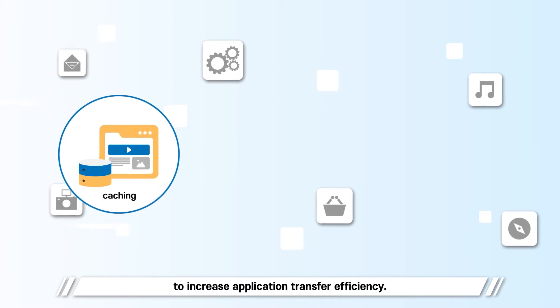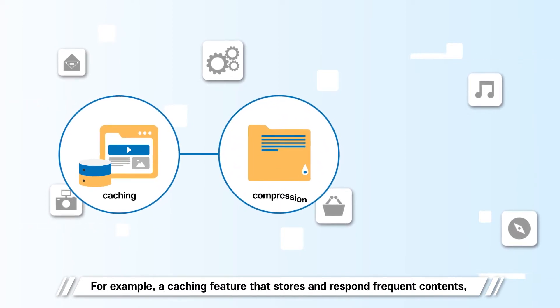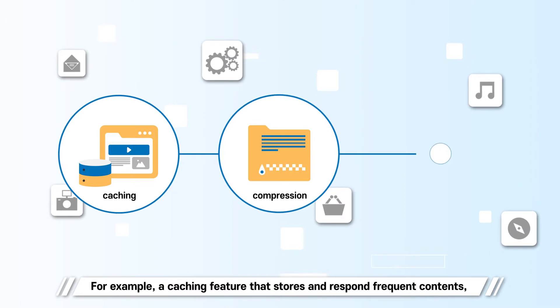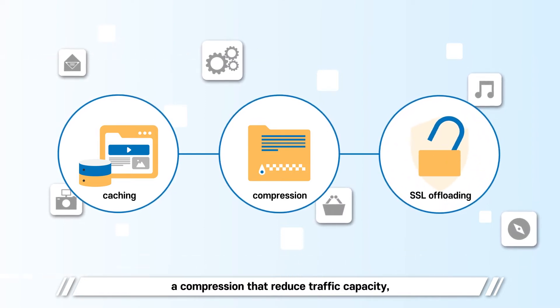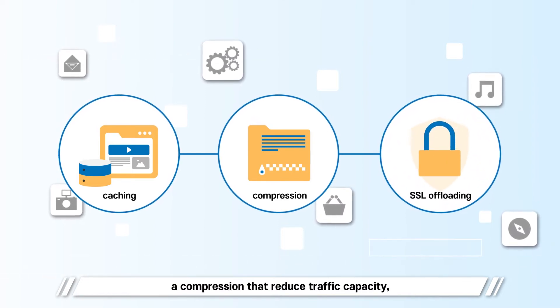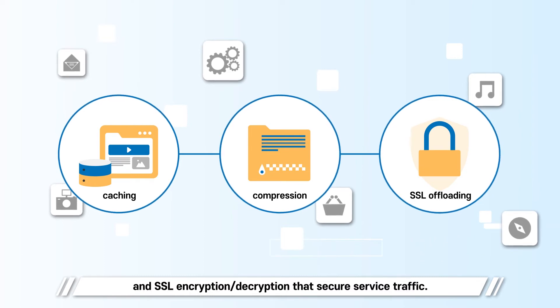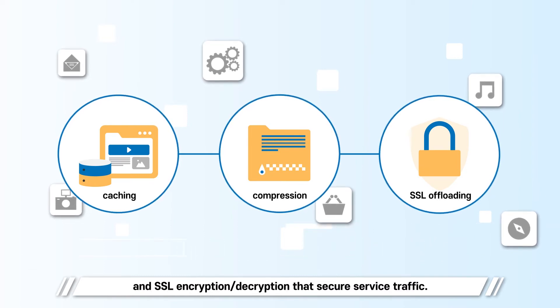PASK supports various acceleration functions to increase application transfer efficiency. For example, a caching feature that stores and responds to frequent contents, compression that reduces traffic capacity, and SSL encryption and decryption that secures service traffic.